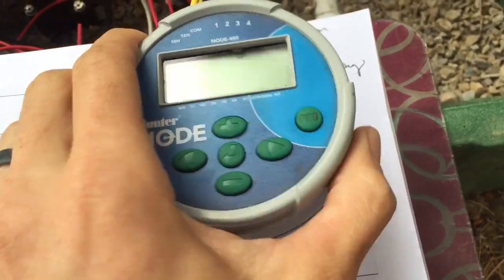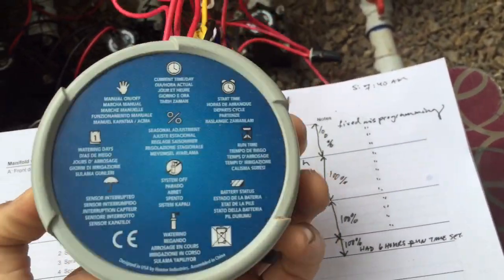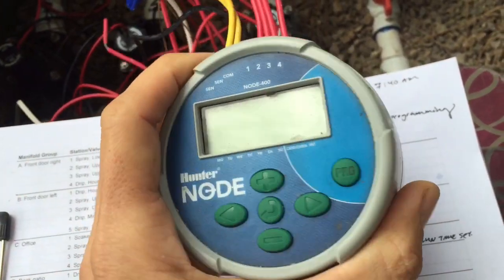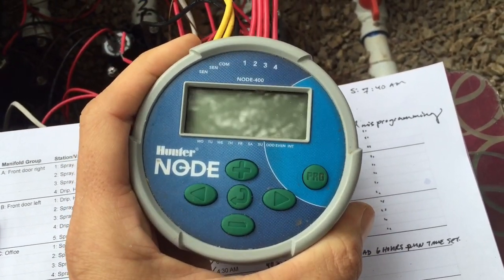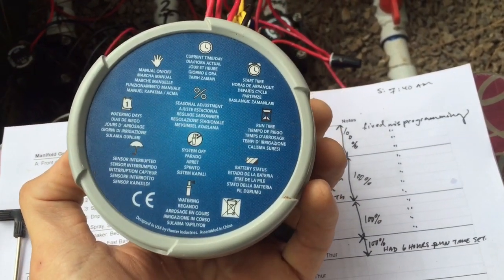The cool thing about these things is that they are battery operated. You spin off the backside, put in one 9-volt battery, and this baby can run for roughly six months or longer, depending on the load on that battery and the quality of that battery.